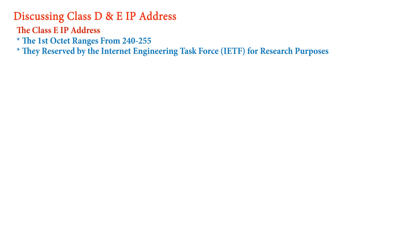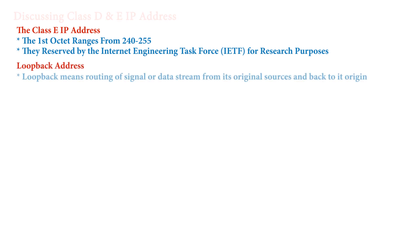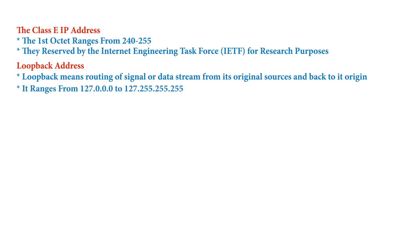Now let's talk about loopback addresses. The term loopback means routing a signal or data stream from its original source back to its origin. The purpose is mainly for troubleshooting and testing network connectivity. This address range starts at 127.0.0.0 and ends at 127.255.255.255. Whenever a device sends a packet to a loopback address, that traffic is processed by the TCP/IP protocol stack within that same device without being transmitted to the network.